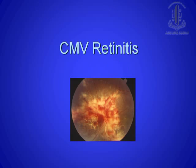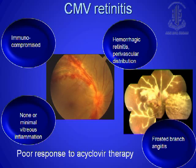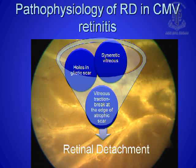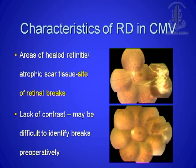Next, we come to CMV retinitis. This is in exact contrast to ARN — we have an immunocompromised patient, hardly any vitreous reaction, hemorrhagic retinitis, sometimes a frosted branch pattern, and a very poor response to acyclovir therapy. The RD develops because there are holes in the atrophic scar, there is a syneretic vitreous, vitreous traction, and a break at the edge of the atrophic scar. Usually there is no PVD, and then you get a retinal detachment. The time course of retinal detachment could be any time after it heals — no specific time gap like in ARN.